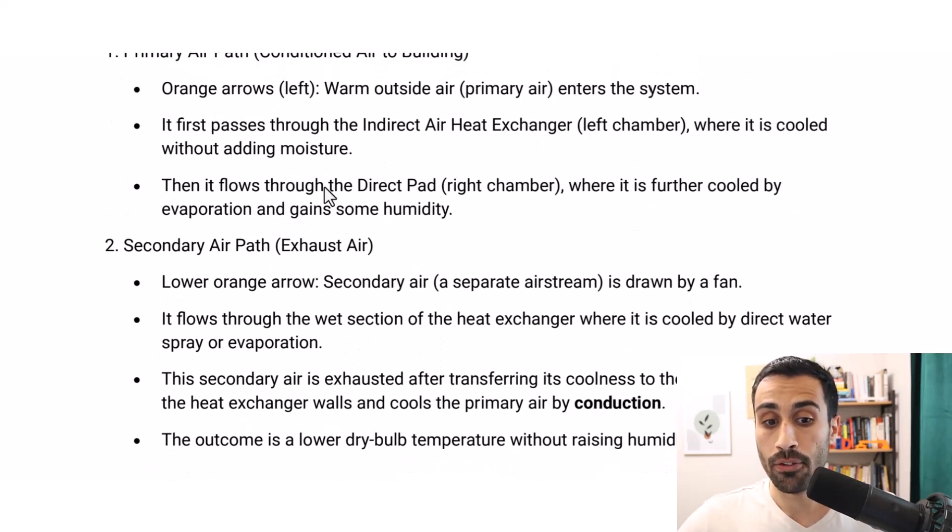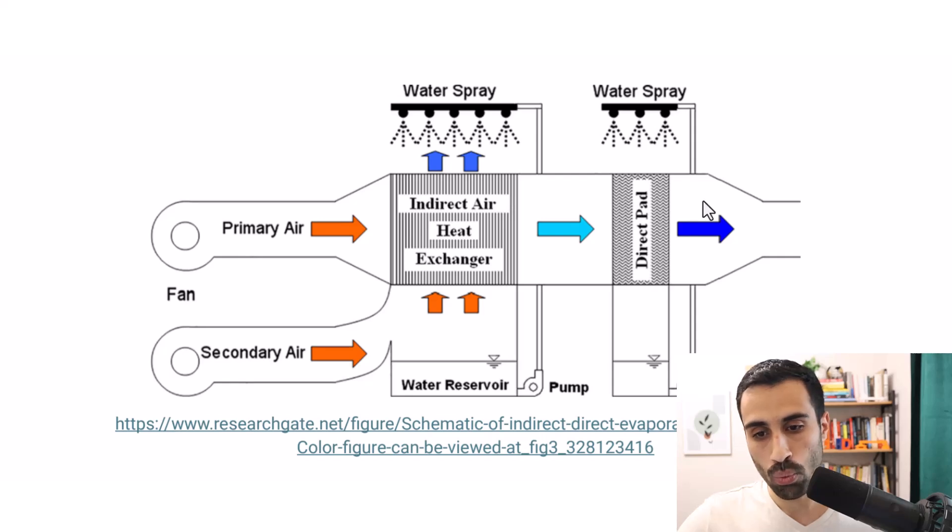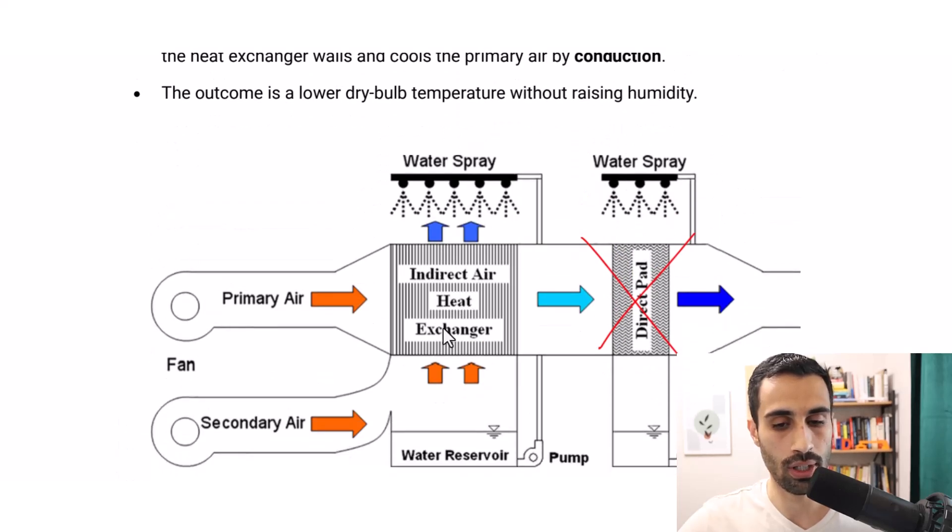After that, it flows through the direct pad right chamber, where it's further cooled by evaporation, gains some humidity. So this right here, we won't focus on because the problem statement tells us indirect, right? The indirect one, which is the one occurring here.